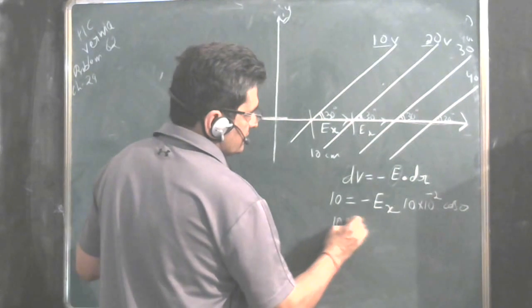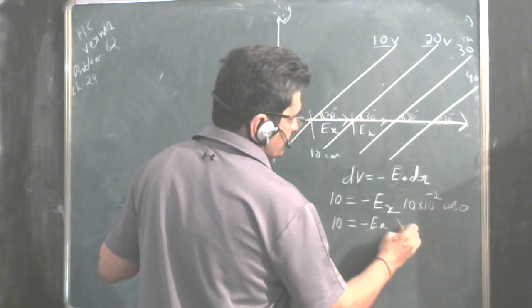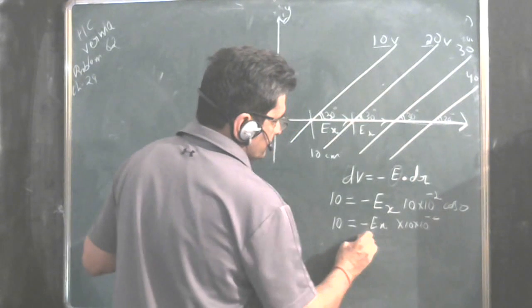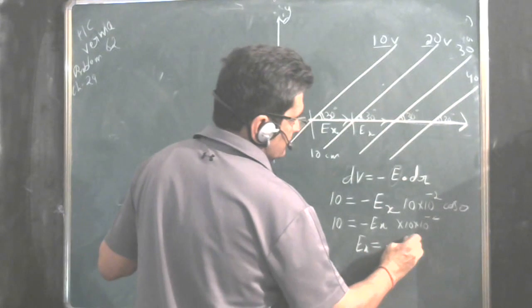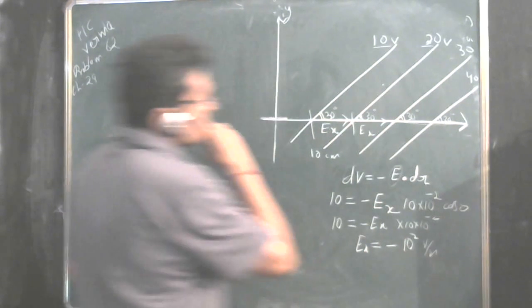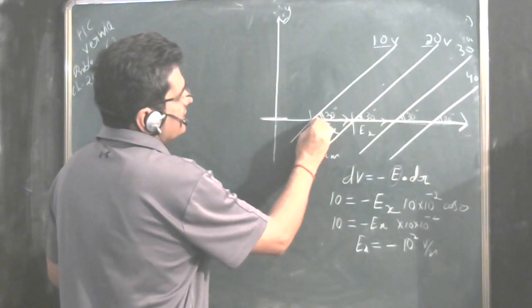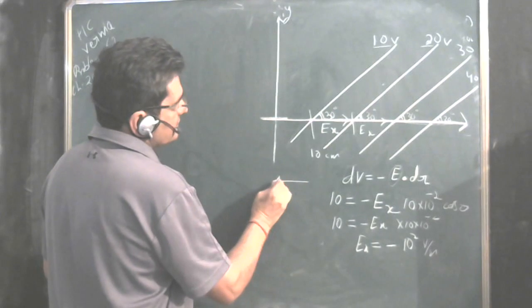So 10 is equal to minus Ex into 10 into 10 to the power minus 2. So Ex is equal to minus 10 to the power 2 volt per meter. This is the value of Ex, and since we are getting negative, it means Ex is in this direction.